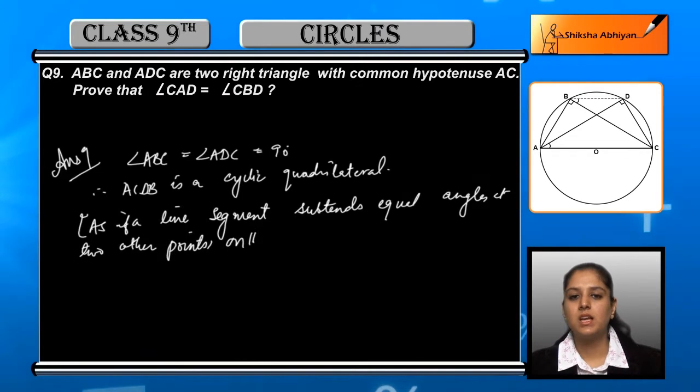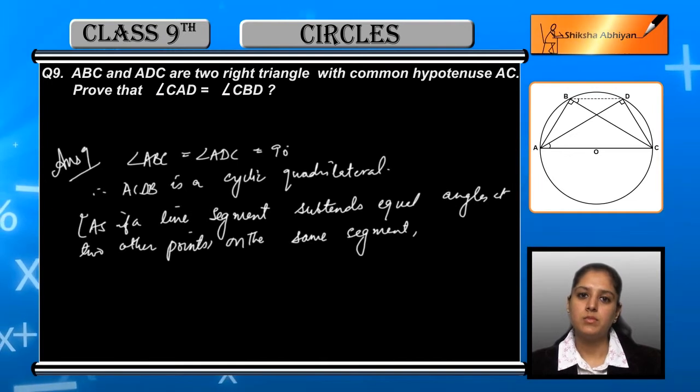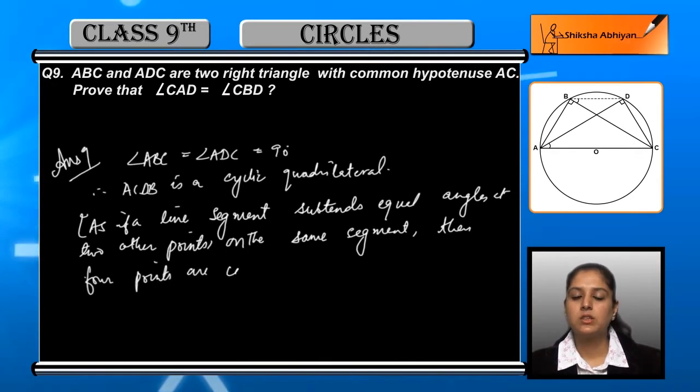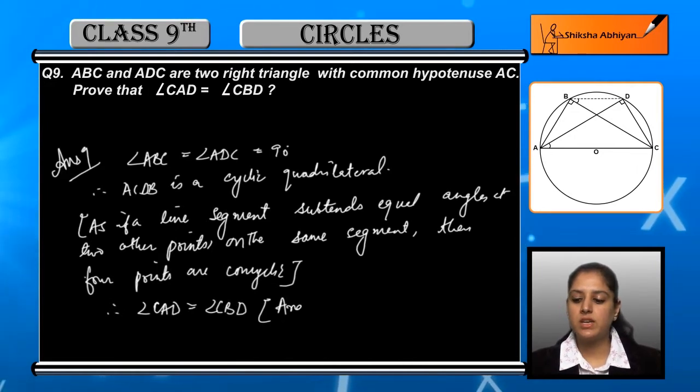So we can say that the four points are lying on the circle, and we can say that angle CAD is equal to angle CBD.